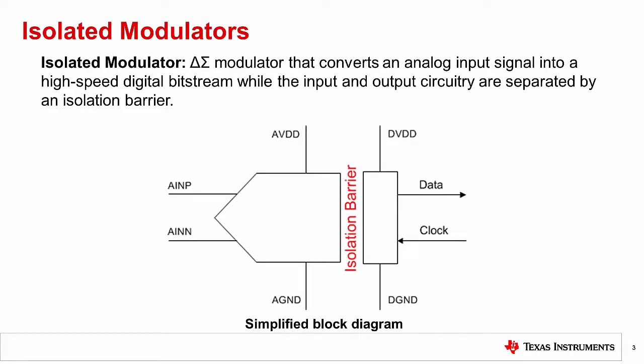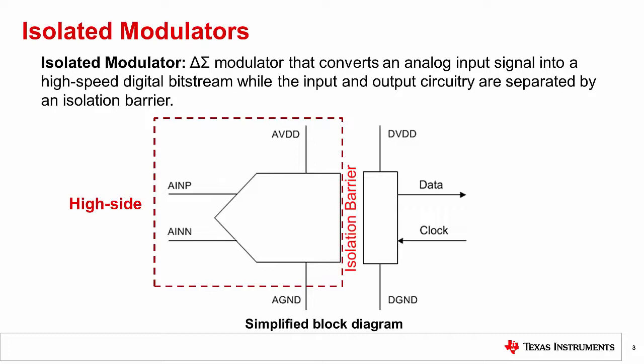Let's start by defining what an isolated modulator is. An isolated modulator is a delta sigma modulator that converts an analog input signal into a high-speed digital bitstream of ones and zeros, while the input and output circuitry are separated by an isolation barrier. This isolation barrier is highly resistant to electromagnetic interference, commonly known as EMI. Interference is a disturbance generated by an external source that negatively affects an electrical circuit. The purpose of the isolated modulator is to prevent noise currents on a high common-mode voltage line from entering the local system ground, interfering with or damaging the low-voltage circuitry.